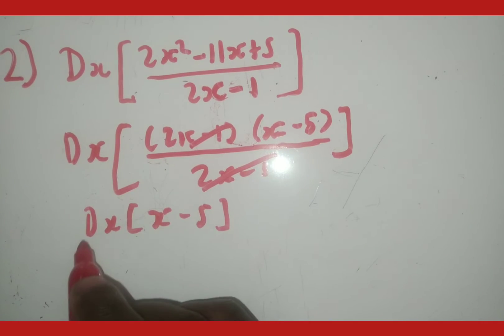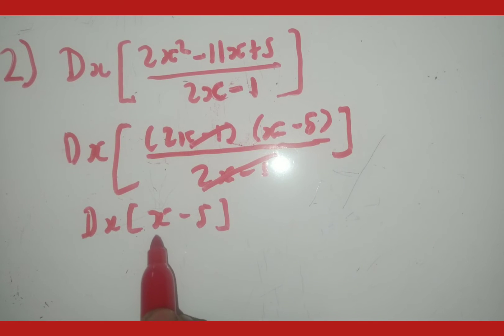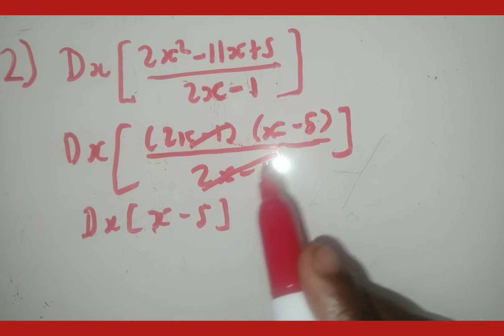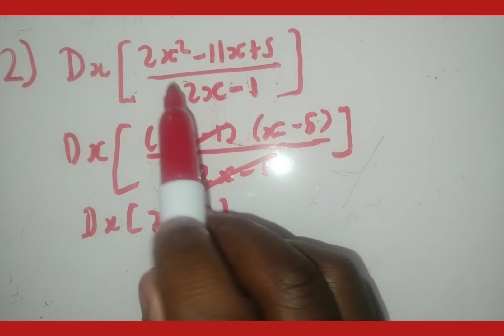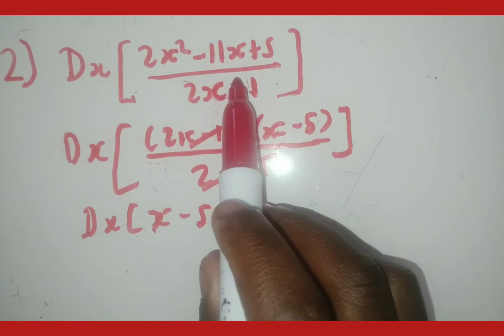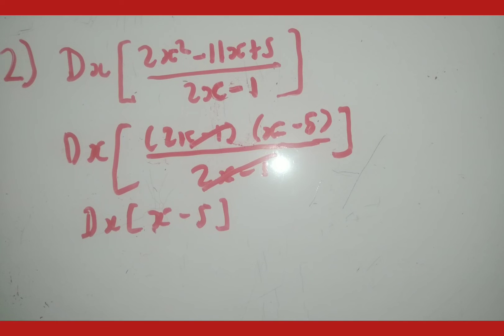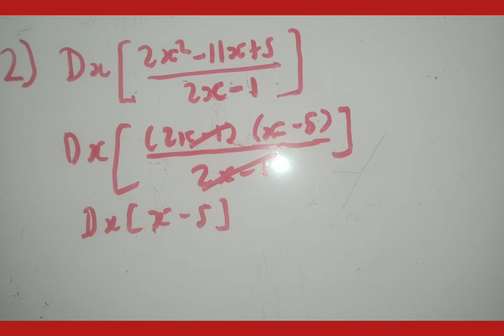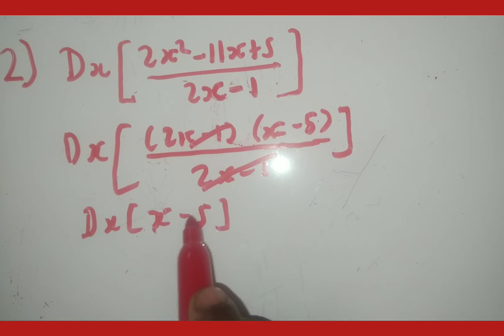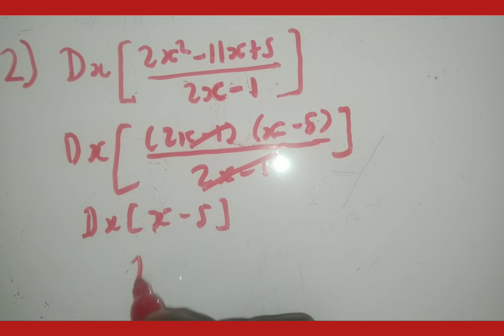Now that this is in a differentiable form, we can find the derivative. Everything here looks like it's in a differentiable form, but they were all in a fraction — so it wasn't yet differentiable. Now that it is, let's find the derivative: the derivative of x is 1, and the derivative of a constant is 0, it just disappears. So the answer is 1.